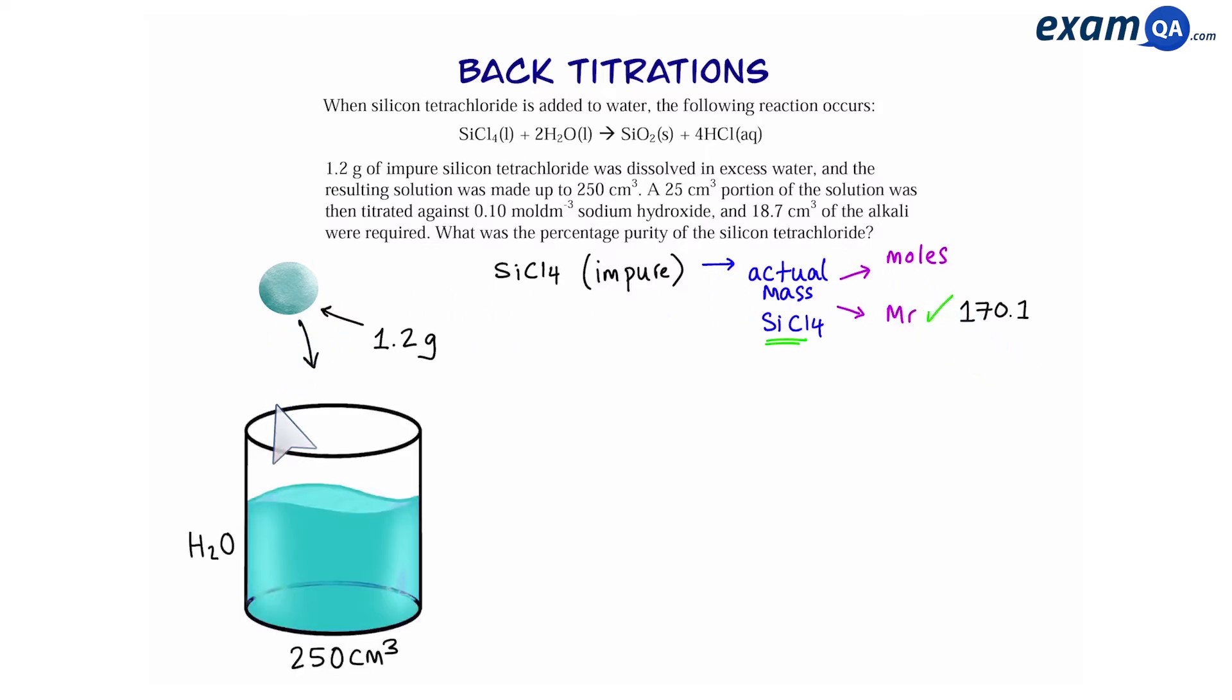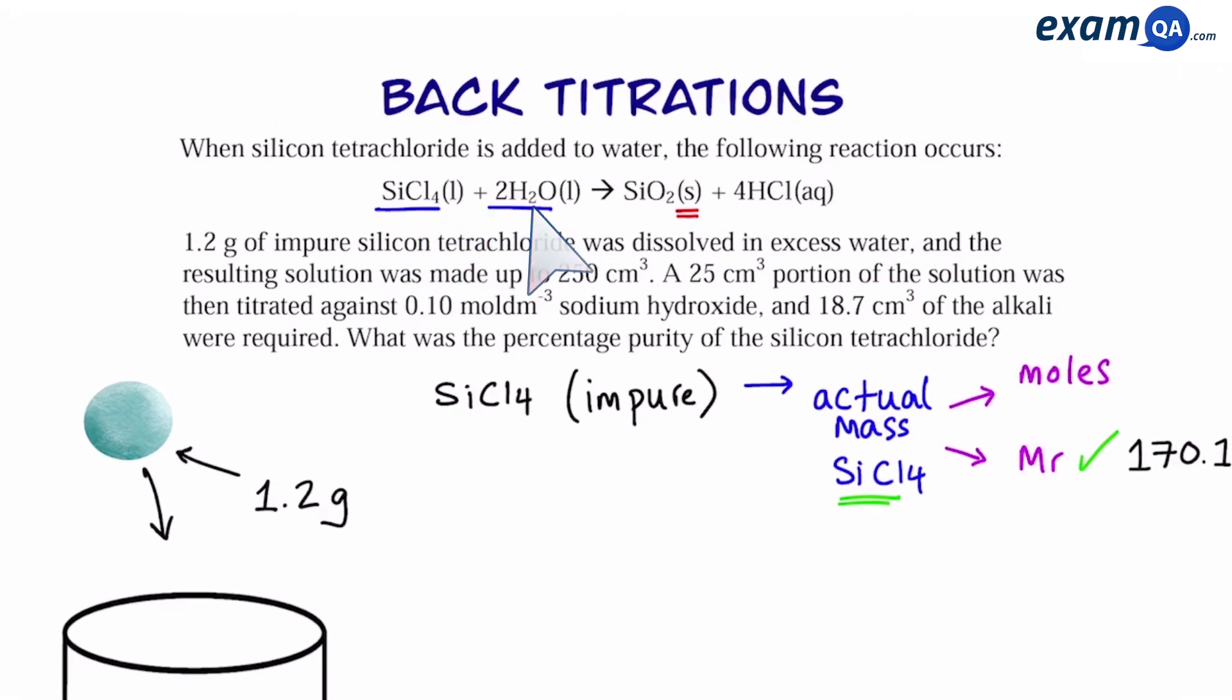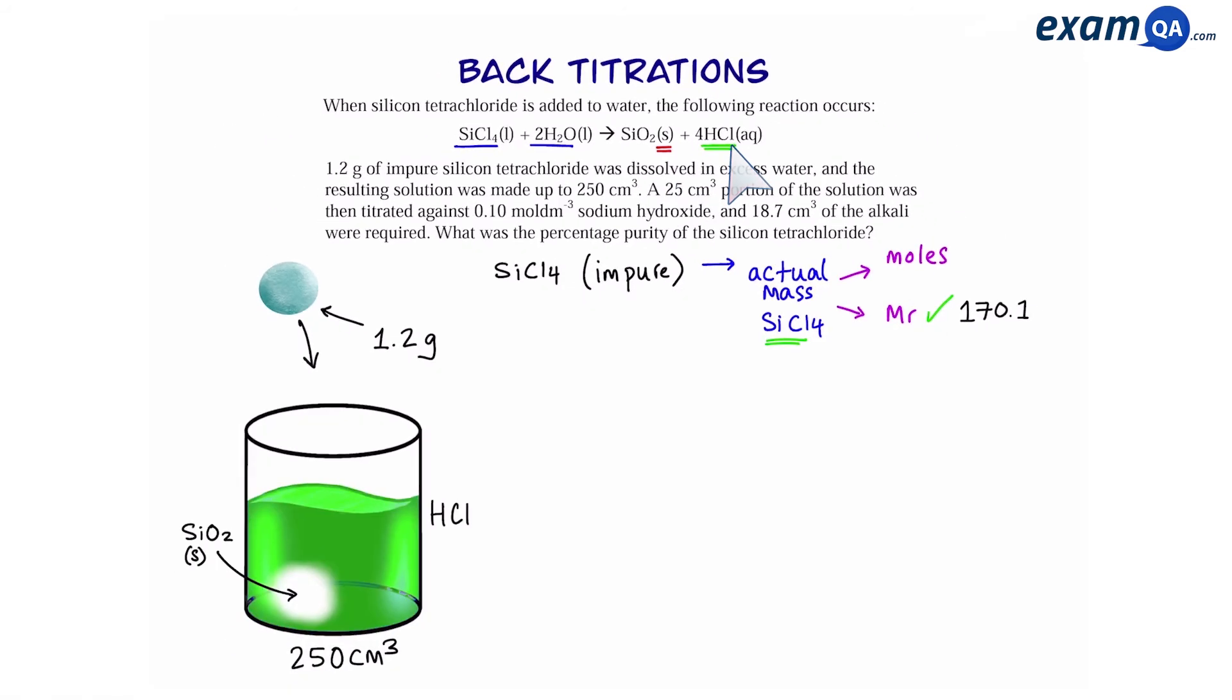So this sample is placed into a beaker with 250 cm³ of water. Now we can see from the equation that when silicon tetrachloride reacts with water, it produces a precipitate and hydrochloric acid. Here we can see that the solution has turned into hydrochloric acid and we also have a silicon oxide precipitate. From this 250 cm³, a 25 cm³ sample is taken and reacted with sodium hydroxide, requiring 18.7 cm³ of a 0.1 molar solution.